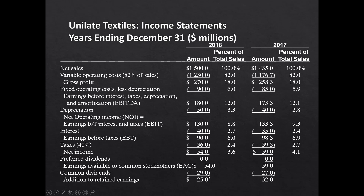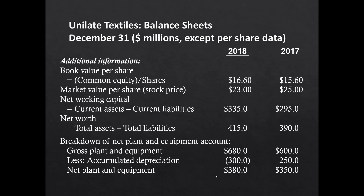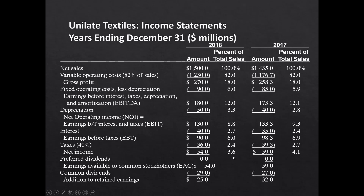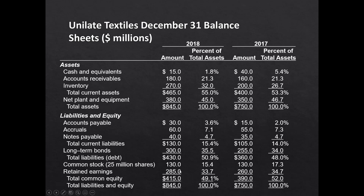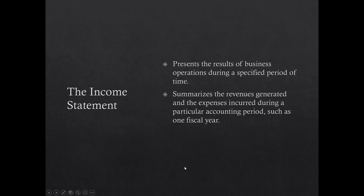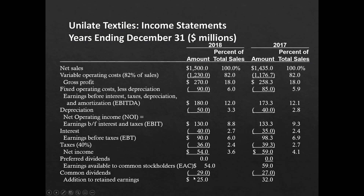Common dividends paid were $29 million in 2018 and $27 million in 2017. The addition to retained earnings was $25 million in 2018 and $32 million in 2017. Going back to the balance sheet, retained earnings went from $260 million to $285 million — exactly that $25 million difference. The depreciation of $50 million is also confirmed by accumulated depreciation going from $250 million to $300 million on the balance sheet.